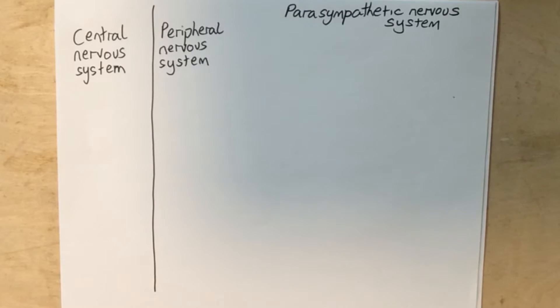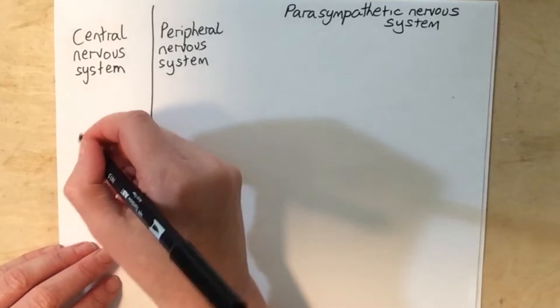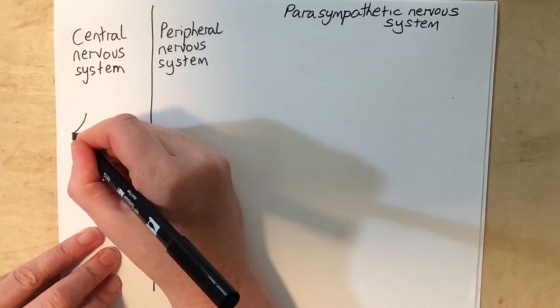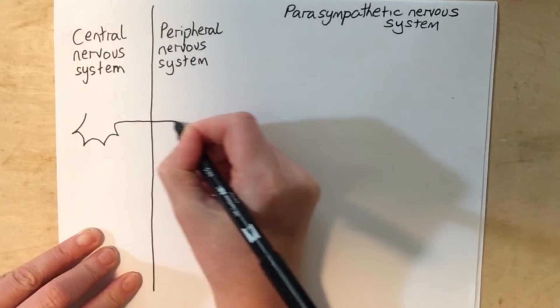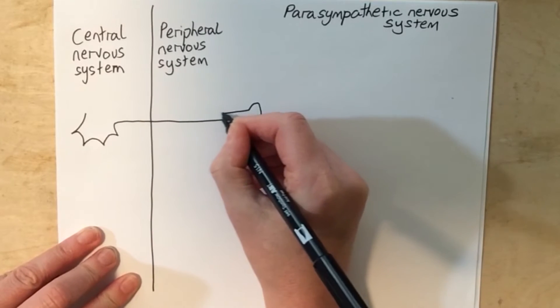So in the parasympathetic nervous system, the pathway consists of two neurons end-to-end, the preganglionic neuron.